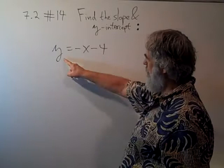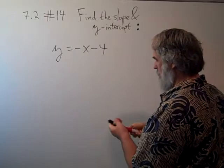Okay, this line is already written in slope-intercept form. When you've solved for y, you're essentially in slope-intercept form. The coefficient of the x is the slope.